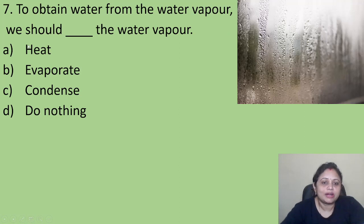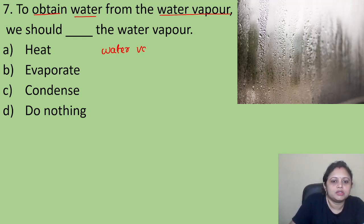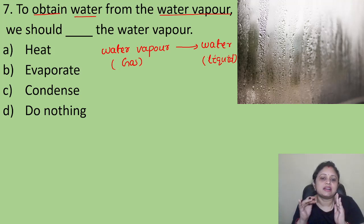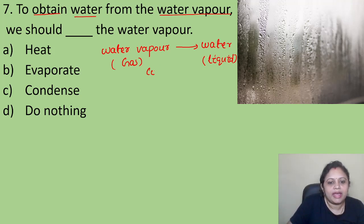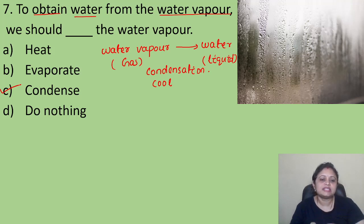Coming to the next question: to obtain water from water vapor, we should — Option A: heat. Option B: evaporate. Option C: condense. Option D: do nothing. We want to convert water vapor into water. Water vapor is in the gaseous state and water is in the liquid state. The process in which gas is converted to the liquid state is known as condensation. When we cool, the gas can be converted into the liquid state. So the correct answer is Option C, that is condense.